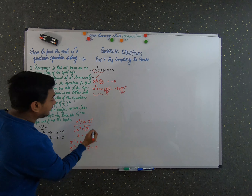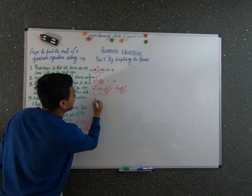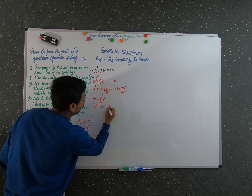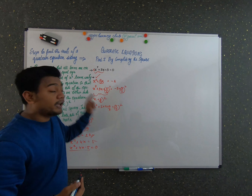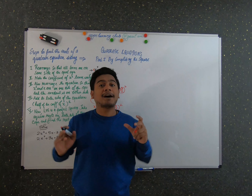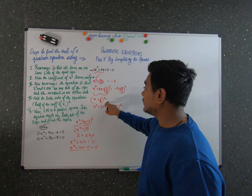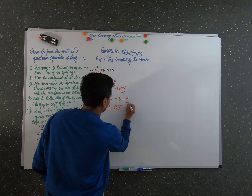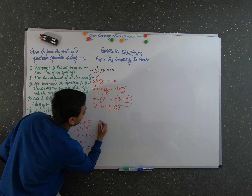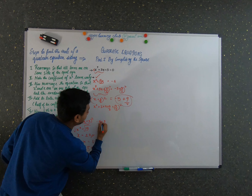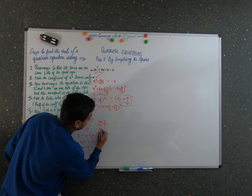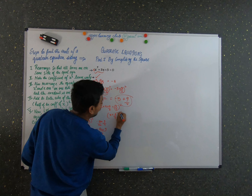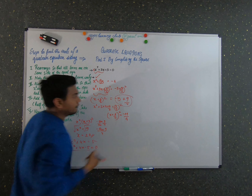We can write the LHS as (x + 3/2)², because expanding (x + 3/2)² gives x² + 2·x·(3/2) + (3/2)², which matches our equation. So now we solve the RHS: minus 5 plus 9/4. Converting to a common denominator: minus 20/4 plus 9/4 equals minus 11/4. So we have (x + 3/2)² equals minus 11/4.